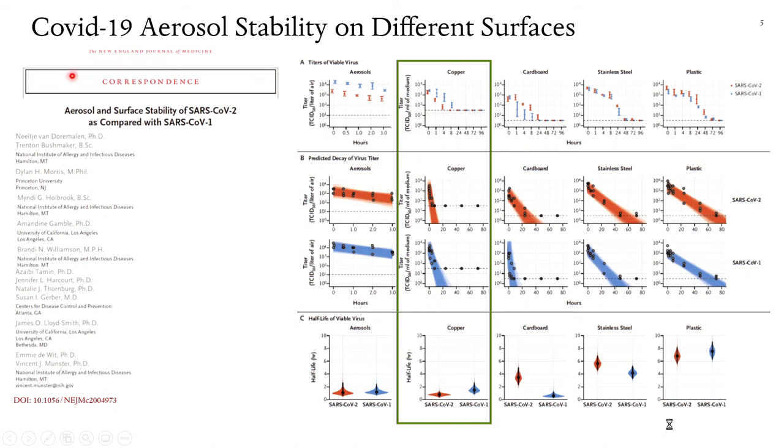Here is a recent study that was published in March 2020 at the New England Journal of Medicine, where researchers have studied the stability of SARS-CoV-2 and SARS-CoV-1. SARS-CoV-2, which is the orange symbols here, is the COVID-19, in aerosols on various surfaces of copper, cardboard, stainless steel, and plastic.